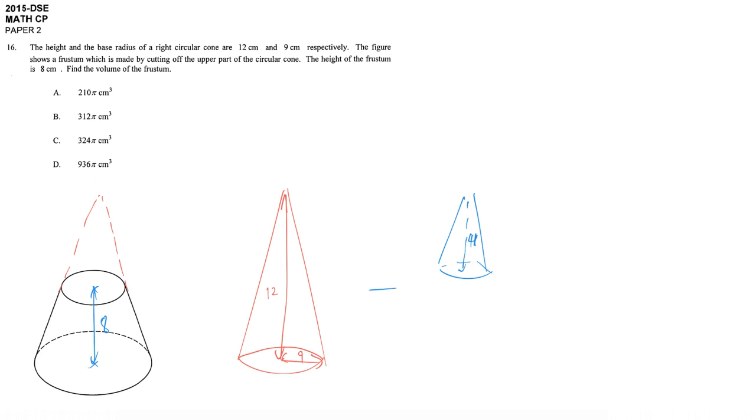The height of the smaller cone is 4 cm. To calculate the volume of the frustum, we have to find the base radius of the smaller cone. It's quite obvious that 12 becomes 4 by dividing by 3. By similar reasoning, the base radius divided by 3 gives us 3 cm. Now we can calculate the volume.